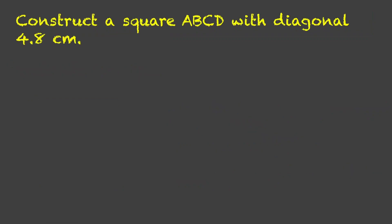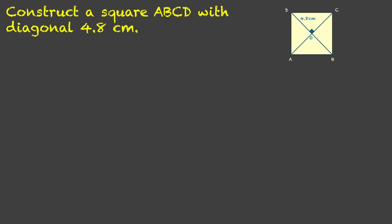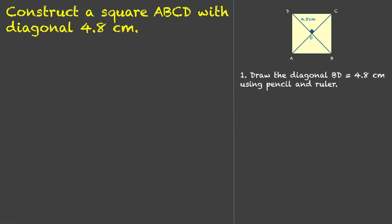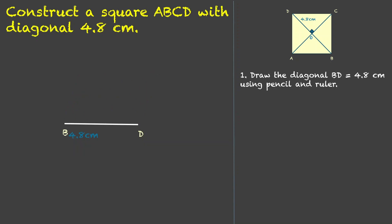Now let us see one example. We need to construct a square ABCD with diagonal 4.8 centimeters. We are given only one diagonal, but that is not an issue because both diagonals are equal. Let us draw a rough sketch: we have ABCD with the diagonals intersecting at O, and the length is 4.8. Since we are given only one dimension, we will take it as our base. Draw the diagonal BD using pencil and ruler — we make a line of 4.8 centimeters. This is BD.